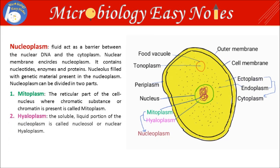Nucleoplasm is a fluid that acts as a barrier between the nuclear DNA and the cytoplasm. The nuclear membrane encircles the nucleoplasm. It contains nucleotides, enzymes and proteins. The nucleolus, filled with genetic material, is present in the nucleoplasm.